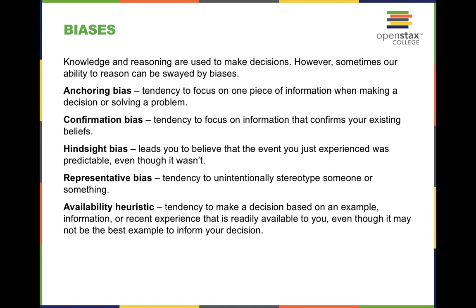Confirmation bias is our tendency to focus on information that only confirms our existing beliefs and to sway away from information that goes against them. Because our beliefs are important to us, we get personal about them. Whenever we see information that contradicts what we believe, it causes agitation and may redirect us to seek out information that continues to confirm our existing views.